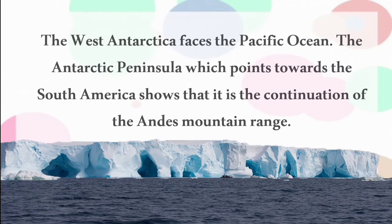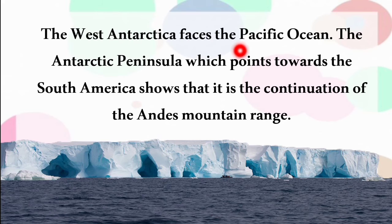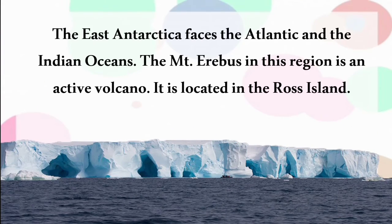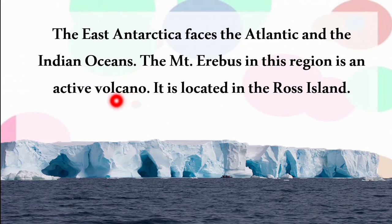West Antarctica faces the Pacific Ocean, and the Antarctic Peninsula points towards South America, showing it is a continuation of the Andes mountain range. East Antarctica faces the Atlantic and Indian Oceans. Mount Erebus in East Antarctica, located in Ross Island, is an active volcano.